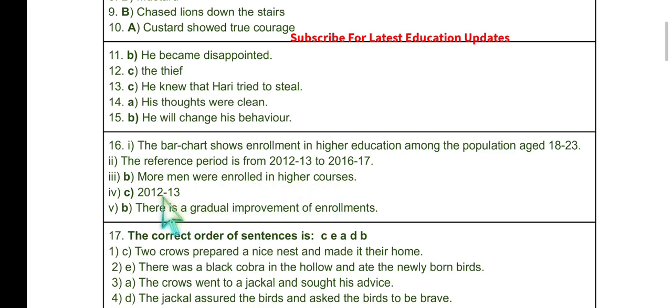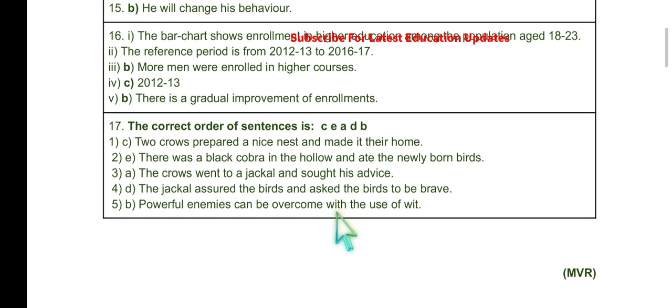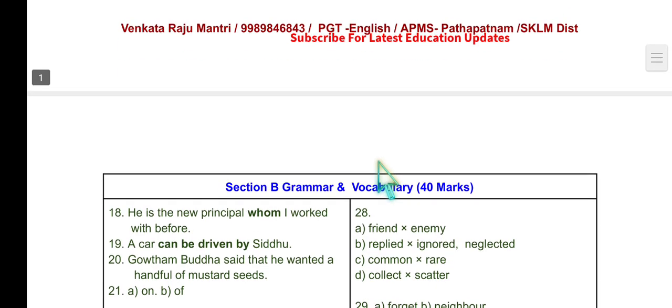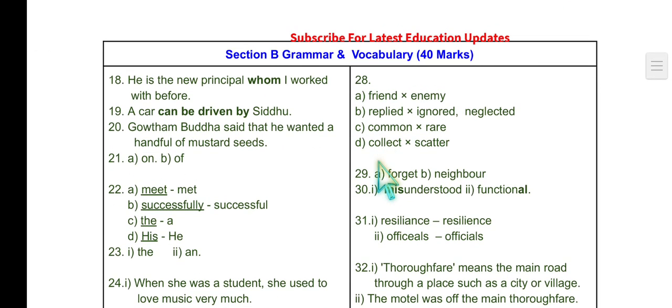Question 16 continued: From 2012–13 there is a gradual improvement of enrollments if you compare from the starting year to the ending year. Question 17: Arranging the jumbled sentences in a meaningful order — the answers are C, E, A, D, B.